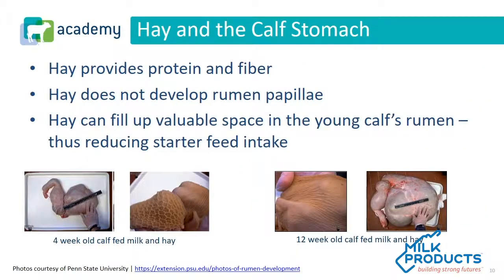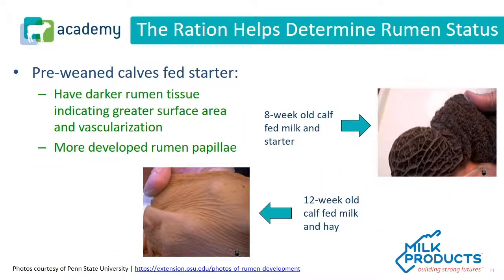When considering hay and its effect on the calf's stomach, hay does provide protein and fiber, but hay does not develop the rumen papillae. Hay will fill up valuable space in the young calf's rumen and reduce starter feed intake. If you look at the rumen of a 4-week-old calf fed milk and hay and a 12-week-old calf fed milk and hay, you can see how hay fills up and distends the rumen. Pre-weaned calves fed starter have darker rumen tissue with greater surface area and vascularization, and more developed rumen papillae. Comparing an 8-week-old calf fed milk and starter to a 12-week-old calf fed milk and hay, you can see the difference in their rumen.